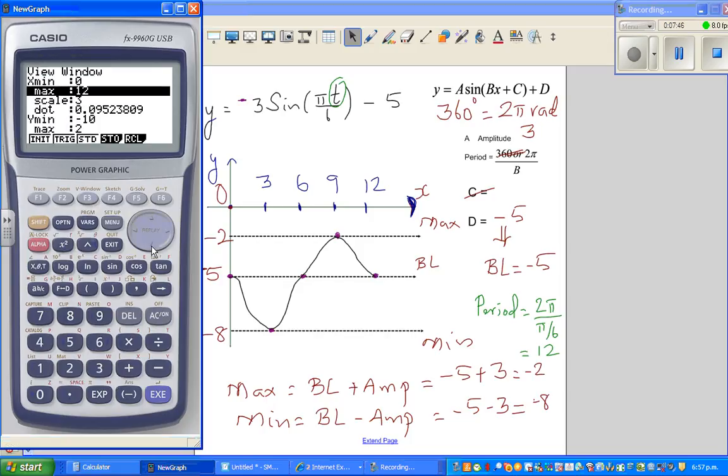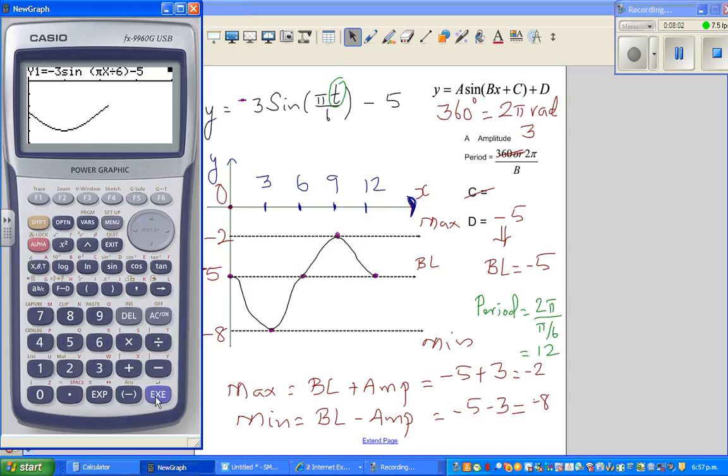Shift, V window. 0 to 12, that's the scale. You've got a scale of 3. The y-minimum, I've gone from minus 10 to maximum 2, scale of 2. Let us draw it. Can you see? This starts at baseline, hits the minimum, maximum.